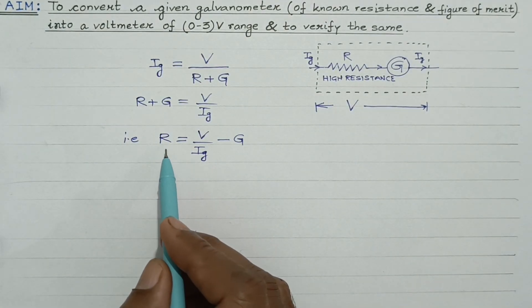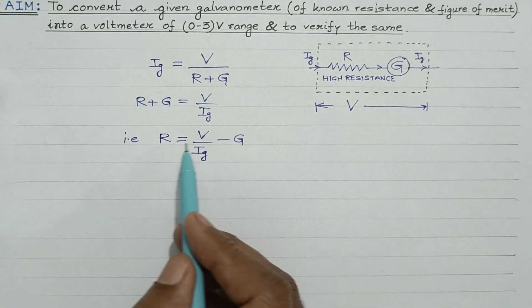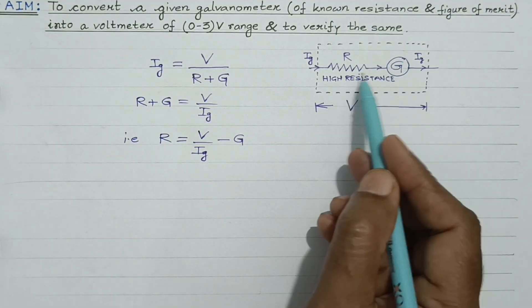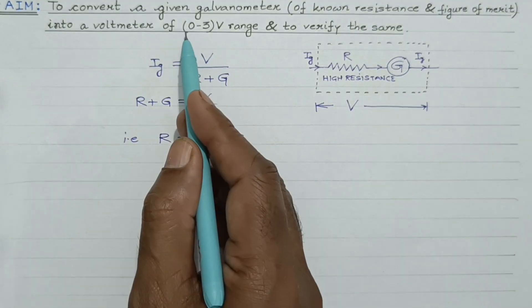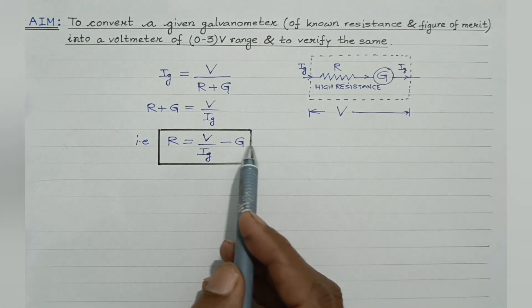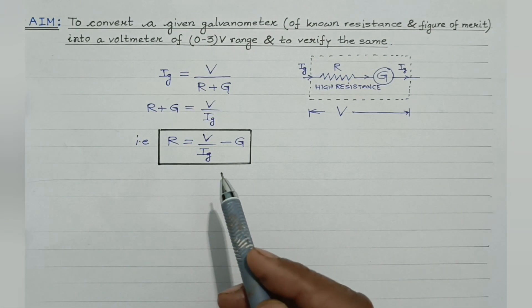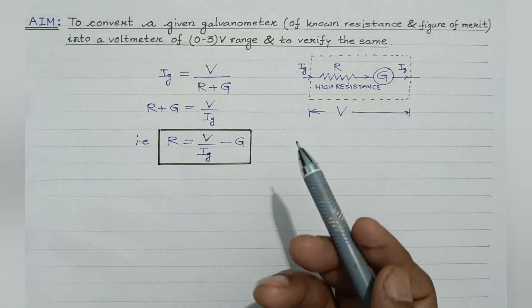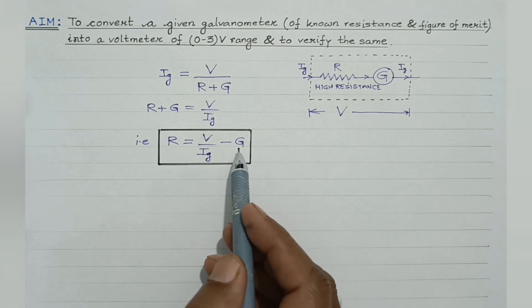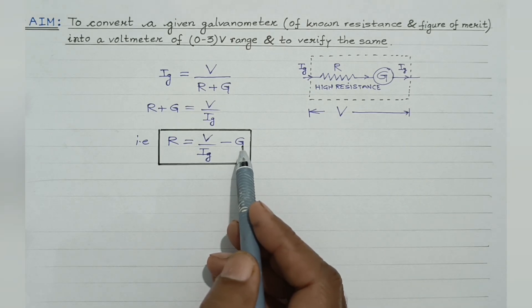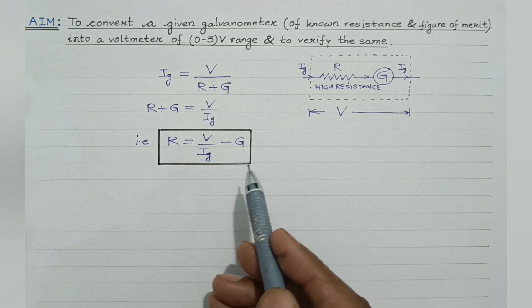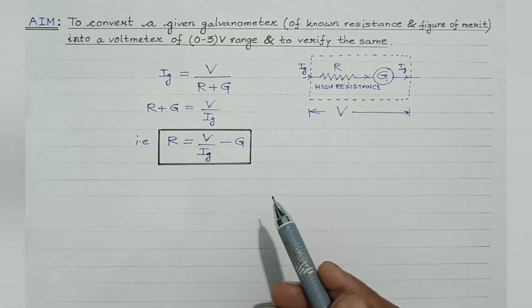This is the mathematical formula for the high resistance wire which needs to be connected in series to the given galvanometer so as to convert it into a voltmeter of range 0 to 3 volt. In order to perform this experiment, connections should be neat, clean and tight. The resistance of the galvanometer, capital G, has to be found by the half deflection method, and the figure of merit, capital K, can also be easily determined.